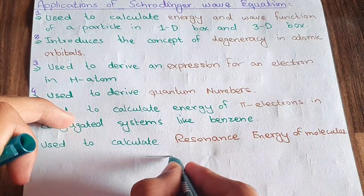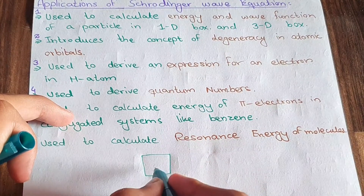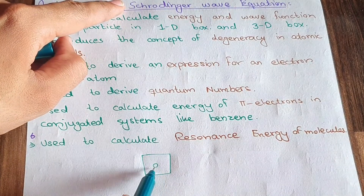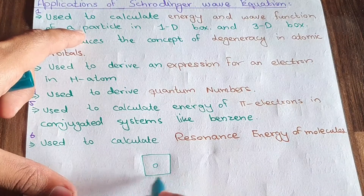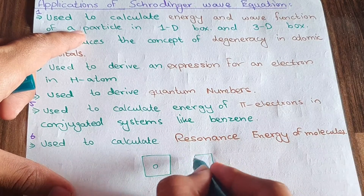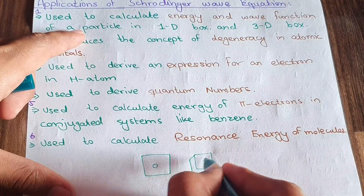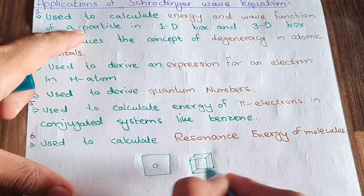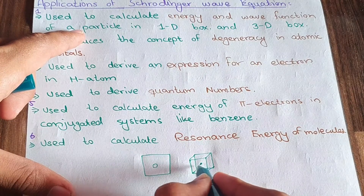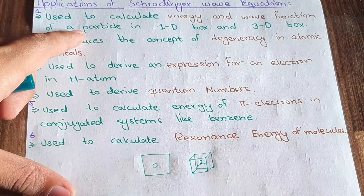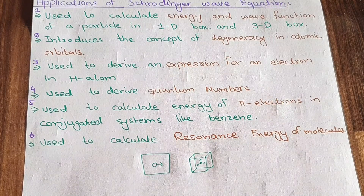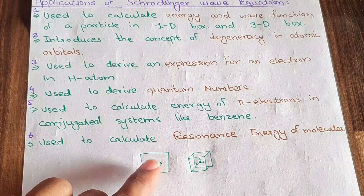A one-dimensional box is just like this — a box with a particle in it — and I can use the Schrödinger wave equation to find the energy and wave function of that particle. Similarly, for a three-dimensional box, I have three directions: X, Y, and Z. Whereas for a one-dimensional box, I only have the X direction.